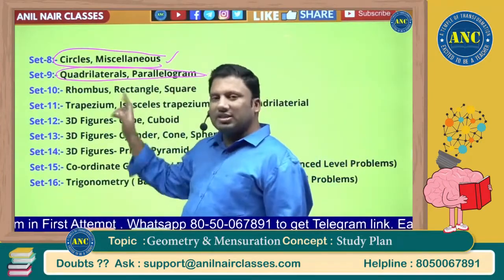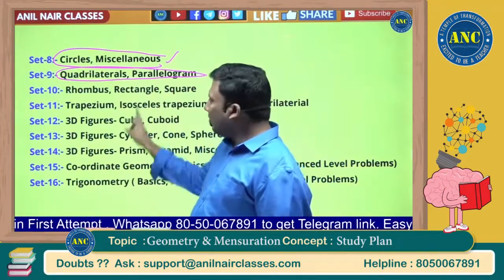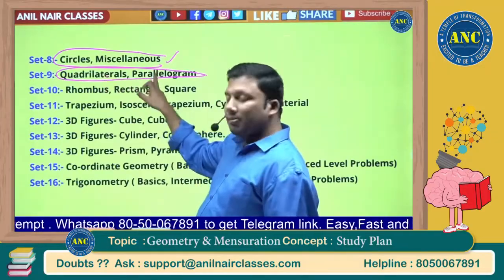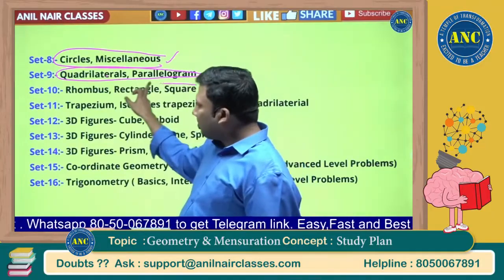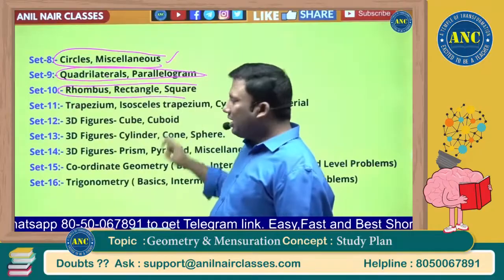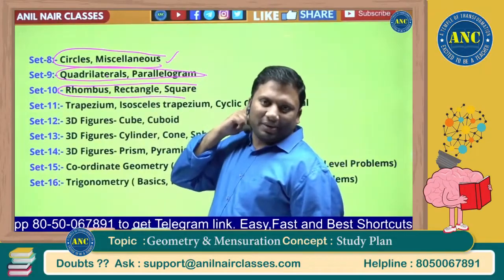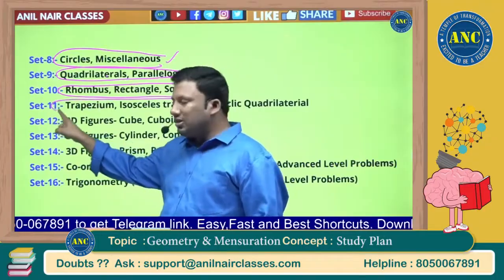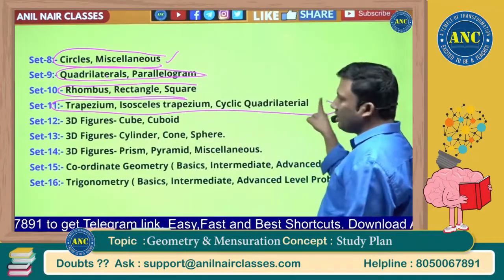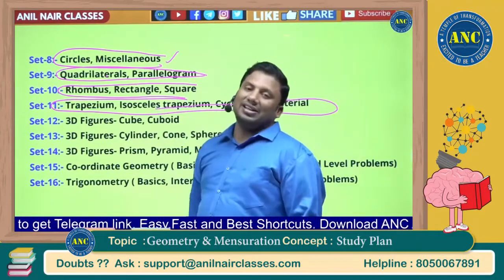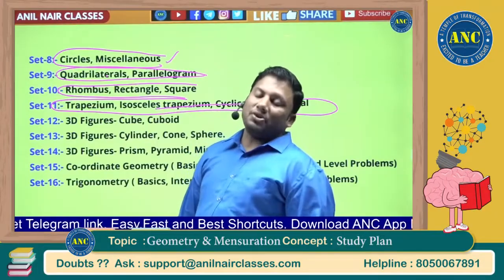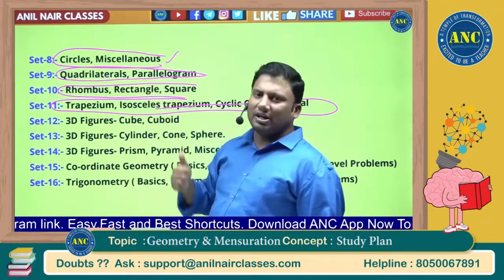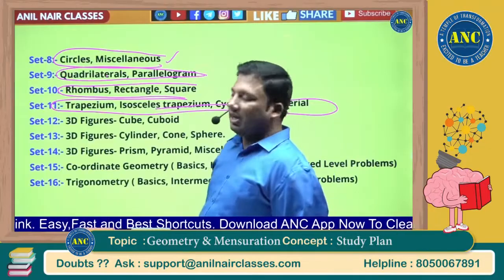Complete the parallelogram concepts, then move to rhombus, rectangle, square, trapezium, and isosceles trapezium problems. Then study cyclic quadrilateral — where opposite angles in a quadrilateral sum to 180 degrees — and Ptolemy's theorem related to cyclic quadrilateral.